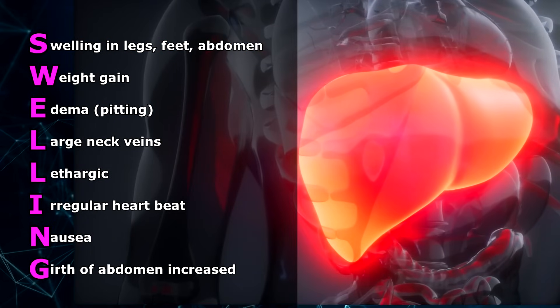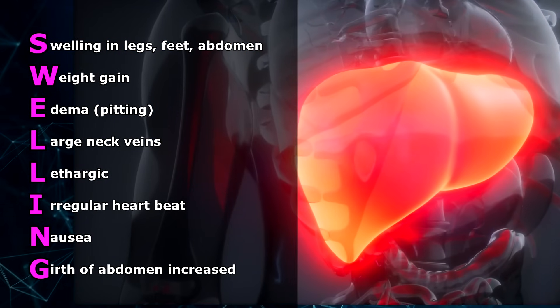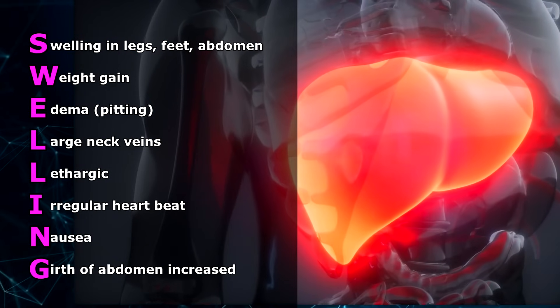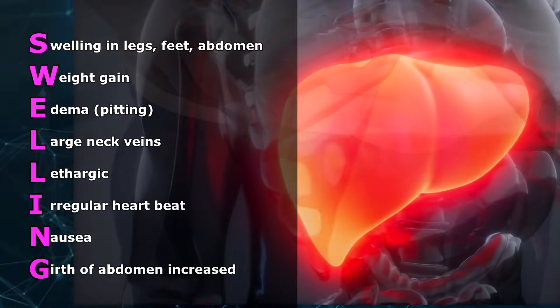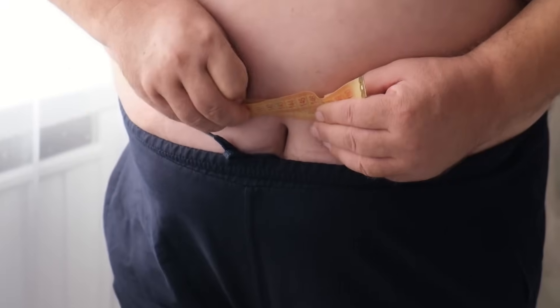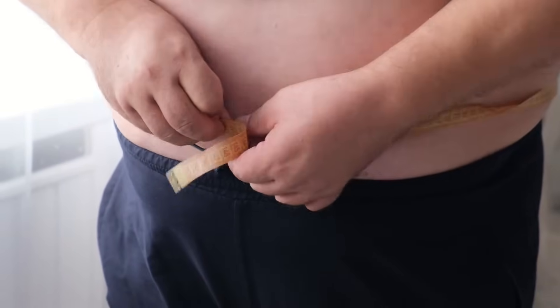And then G is for girth of abdomen will be increased. And this is from the swelling of the liver and the fluid building up in the abdomen, which can lead the patient not to be able to breathe very well.